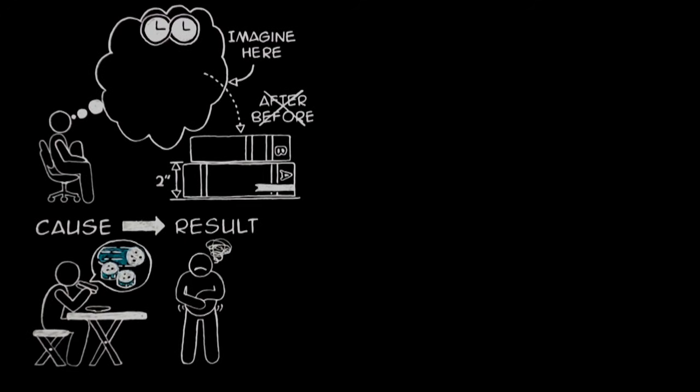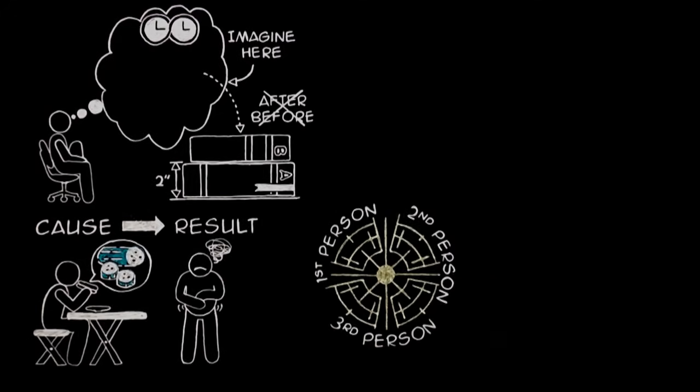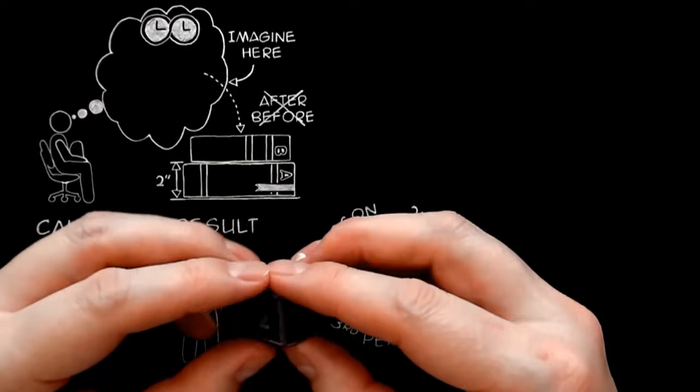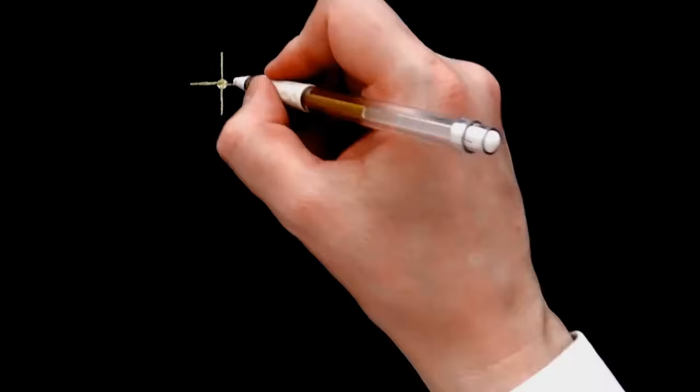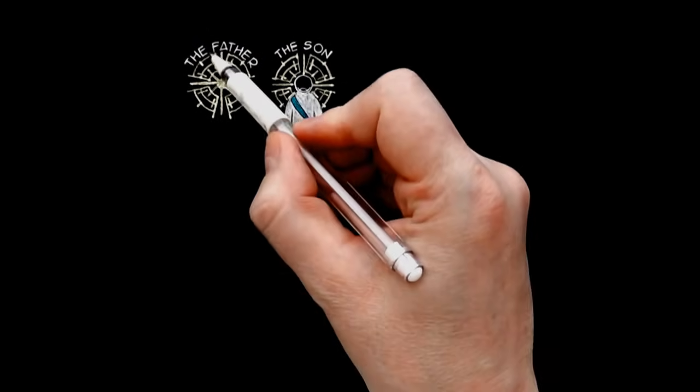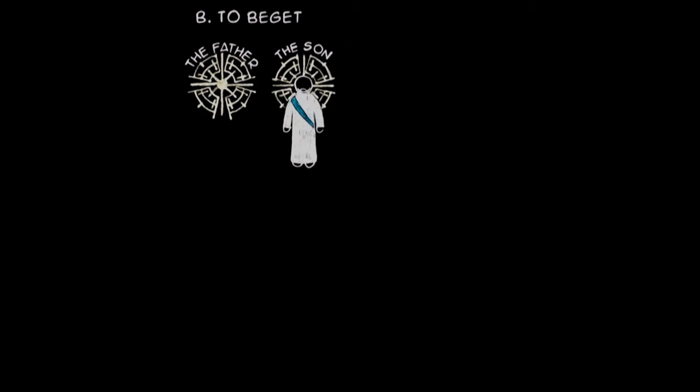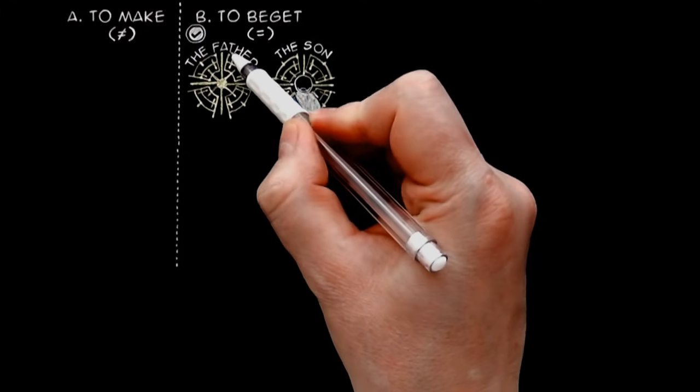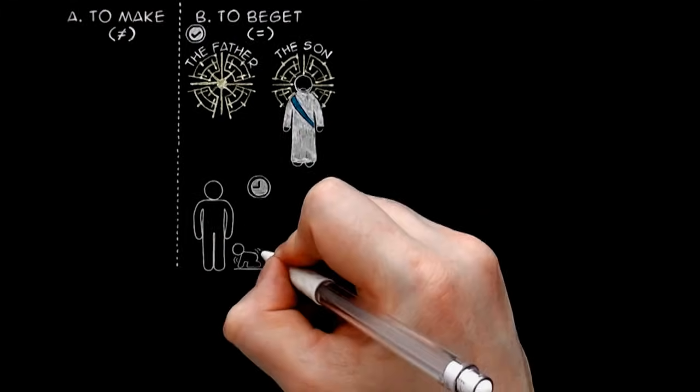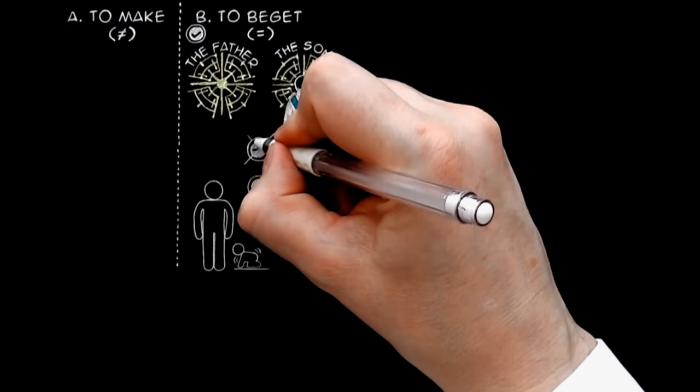I said a few pages back that God is a being which contains three persons while remaining one being, just as a cube contains six squares while remaining one body. But as soon as I begin trying to explain how these persons are connected, I have to use words which make it sound as if one of them was there before the others. The first person is called the father and the second the son. We say that the first begets or produces the second. We call it begetting, not making, because what he produces is of the same kind as himself. In that way, the word father is the only word to use. But unfortunately, it suggests that he is there first, just as a human father exists before his son. But that is not so. There is no before and after about it.